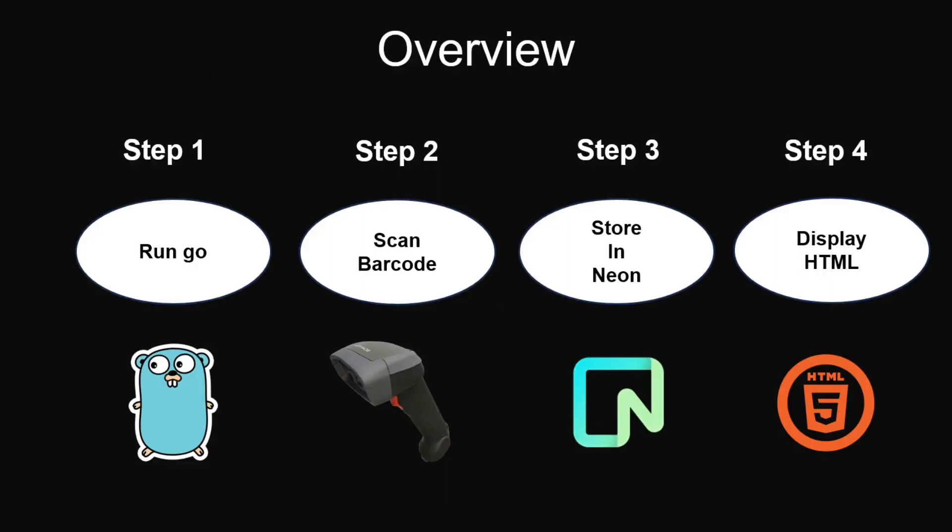Here's a brief overview of how this is going to look. First, we're going to run a Go script of main.go. Second, I'm going to plug in a barcode scanner that I got off Amazon for 15 bucks into the USB port of my machine. Third, we're going to store that data we scan into Neon Database, the official sponsor of this channel. And fourth, I'm going to display HTML showing the database rows so we can see the items scanned in real time.